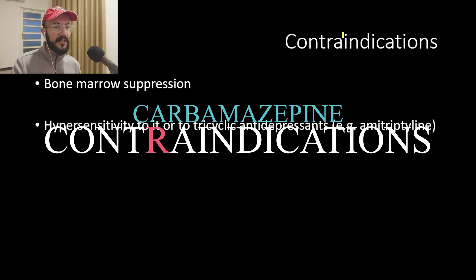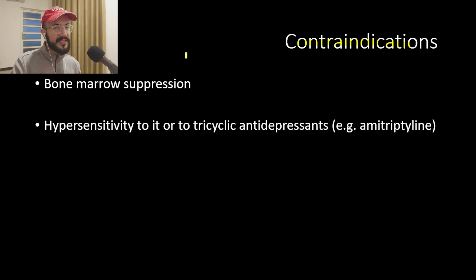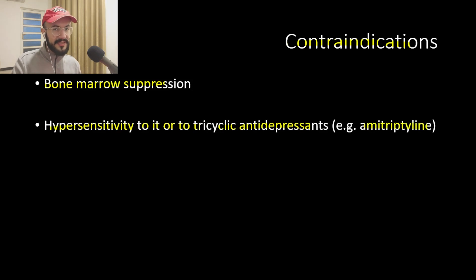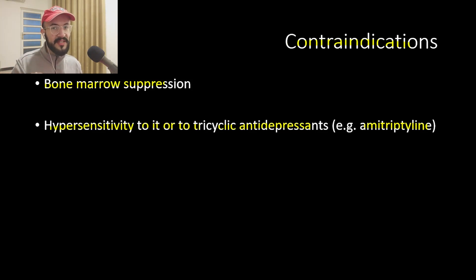Now let's talk about the contraindications. Carbamazepine is contraindicated in bone marrow suppression because it leads to leukopenia. It is also contraindicated in patients with hypersensitivity to it or to tricyclic antidepressants, such as amitriptyline, because carbamazepine has a similar chemical structure to the tricyclic antidepressants. So if the patient is allergic to tricyclic antidepressants, they are also allergic to carbamazepine, and it is important not to give them this medication.